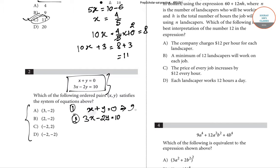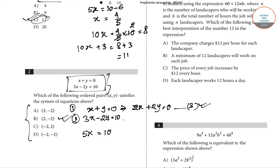Multiplying equation 1 by 2 gives 2x plus 2y equals 0. We already have 3x minus 2y equals 10. Adding these two equations, the +2y and −2y cancel out, giving 5x equals 10.